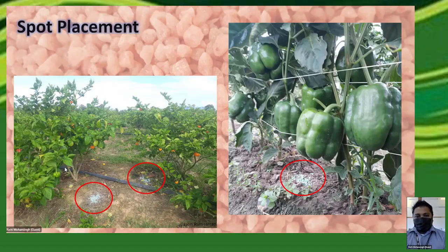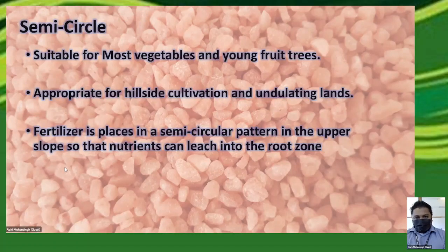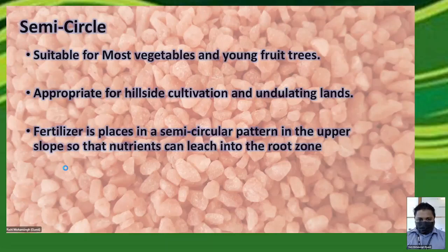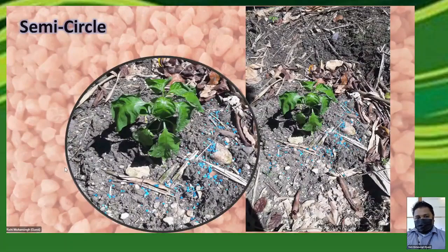The semicircle application method is similar to ring placement but uses only a semicircle. It is suitable for most vegetables and young fruit trees, and is especially appropriate for hillside cultivation. When growing on a slope, apply the fertilizer on the upper slope so that when you irrigate or when rain falls, the nutrients leach into the root zone of your plant rather than away from it. For a plant grown on a steep slope, applying fertilizer to the upper side ensures nutrients wash into the root zone.